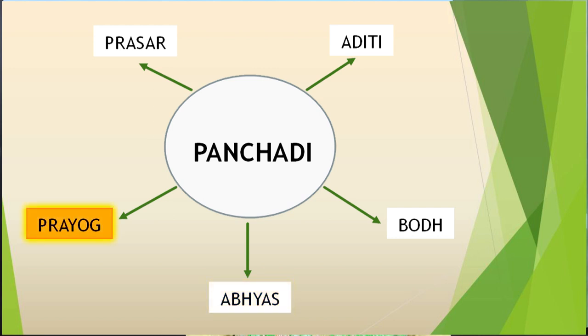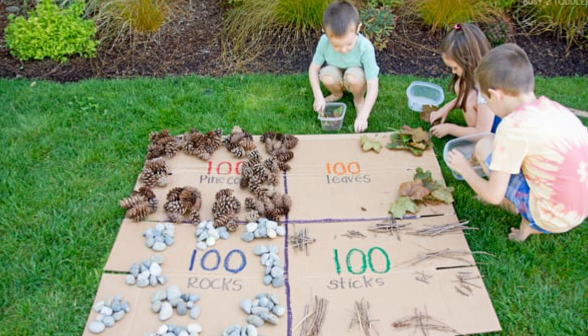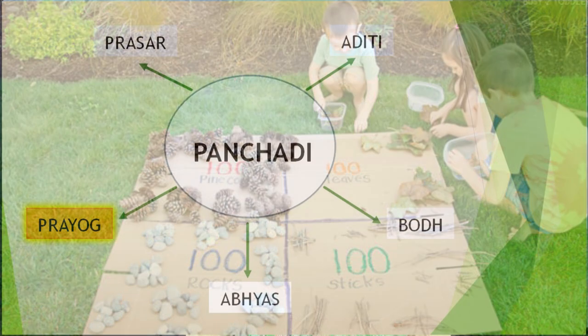Moving on, Prayog or Application. Encourage students to begin applying acquired knowledge in everyday life. It will ensure improvement in quality of learning and quality of life. For example, right from the pre-primary stage, once a child learns counting, the child could be encouraged to count out the number of potatoes or onions in the market bag. Doing simple addition or subtraction during a visit to the grocer will also help.